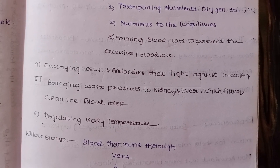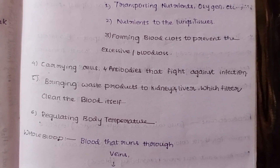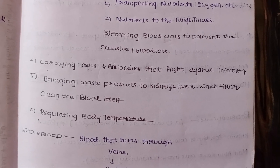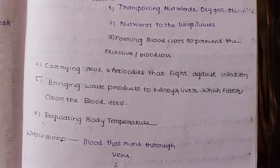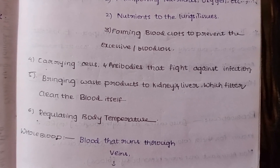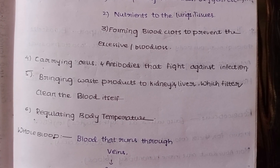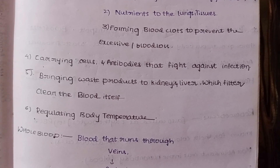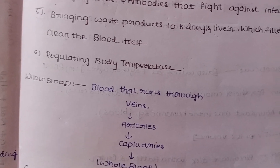The blood carries waste products to the kidney and liver, which purify the blood — that is the correct term. The kidney handles purification. The next function is regulating body temperature and maintaining the body.